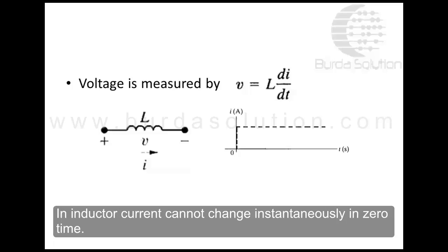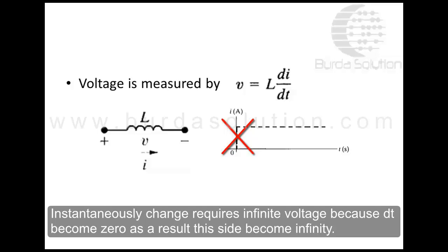In an inductor, current cannot change instantaneously in zero time. Instantaneous change requires infinite voltage because dt becomes zero, and as a result, this side becomes infinity.